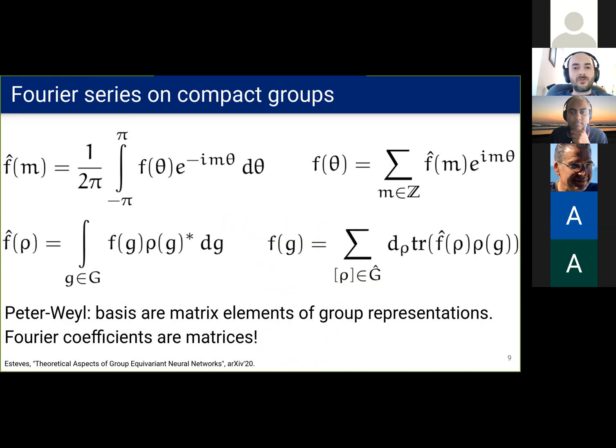Thanks to the Peter-Weyl theorem, we can generalize the Fourier series to compact groups. The basis is formed by matrix elements of group representations, and we arrange the Fourier coefficients as matrices.